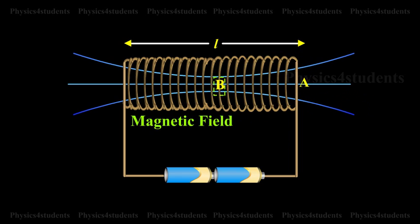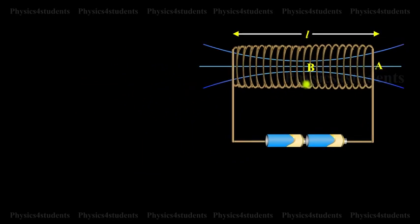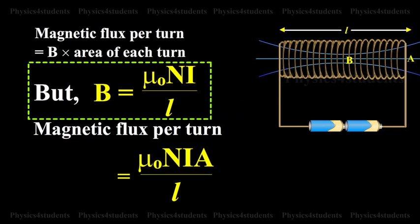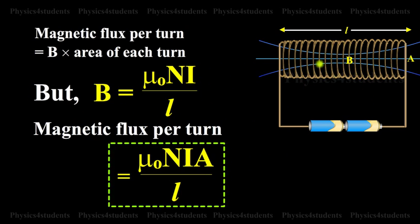If B is the magnetic field at any point inside the solenoid, then magnetic flux per turn equals B into area of each turn, but B equals mu naught N I by L. Magnetic flux per turn equals mu naught N I A by L.